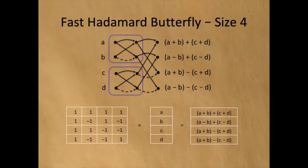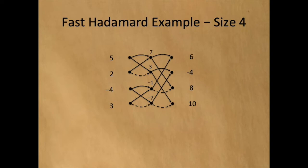The fast Hadamard butterfly of size 4 combines two butterflies of size 2 together, which are shown in blue. Note that if we group the terms appropriately by factoring out negative 1's, we can define the result of the size 4 matrix in terms of the size 2 matrix. We group a plus b and a minus b, and we group c plus d and c minus d. This is the trick to the fast Hadamard transform. If the input vector is 5, 2, minus 4, 3, the output vector will be 6, minus 4, 8, and 10.